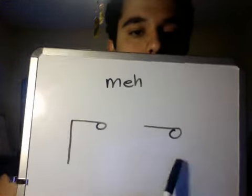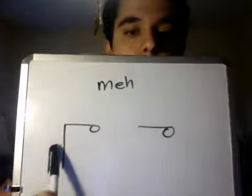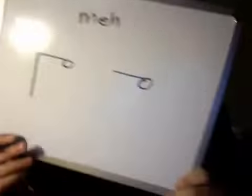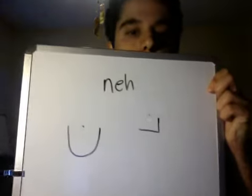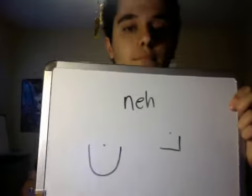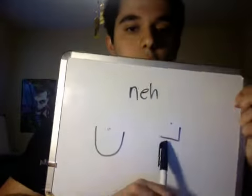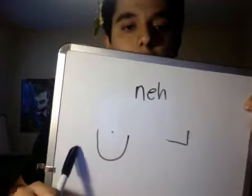ME — beginning of the word, middle of the word, at the end of the word. ME. ME — beginning of the word, end of the word.